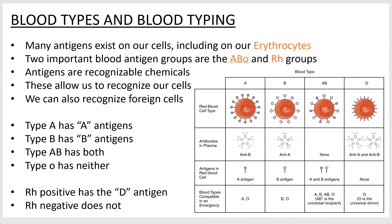The ABO blood types are a carbohydrate found on blood cells — you can call it the A carbohydrate or A antigen, the B carbohydrate or B antigen, and O, which is essentially a zero meaning nothing. So A has A, B has B, AB has both A and B. You can see the actual blood cells drawn in the diagram.